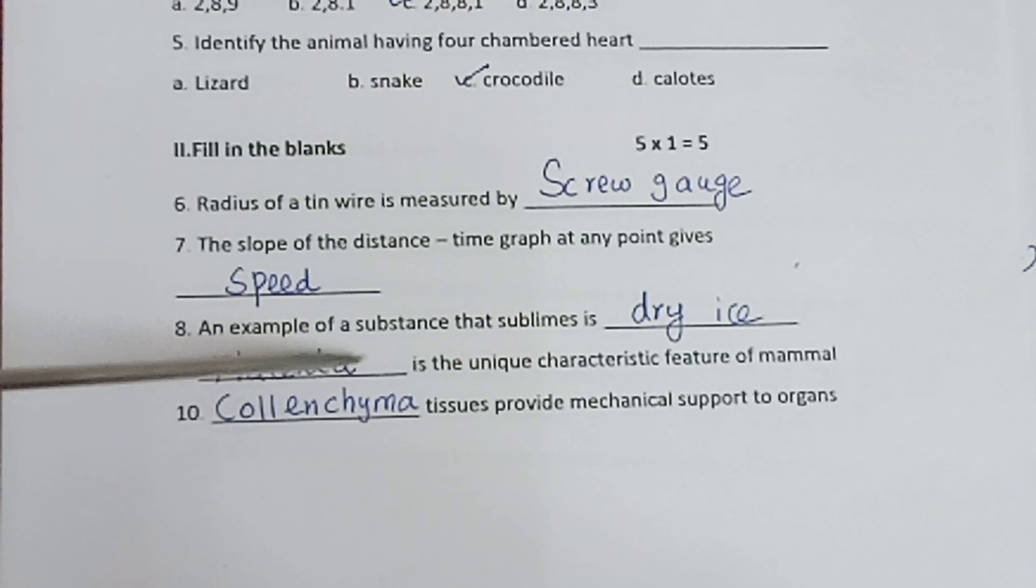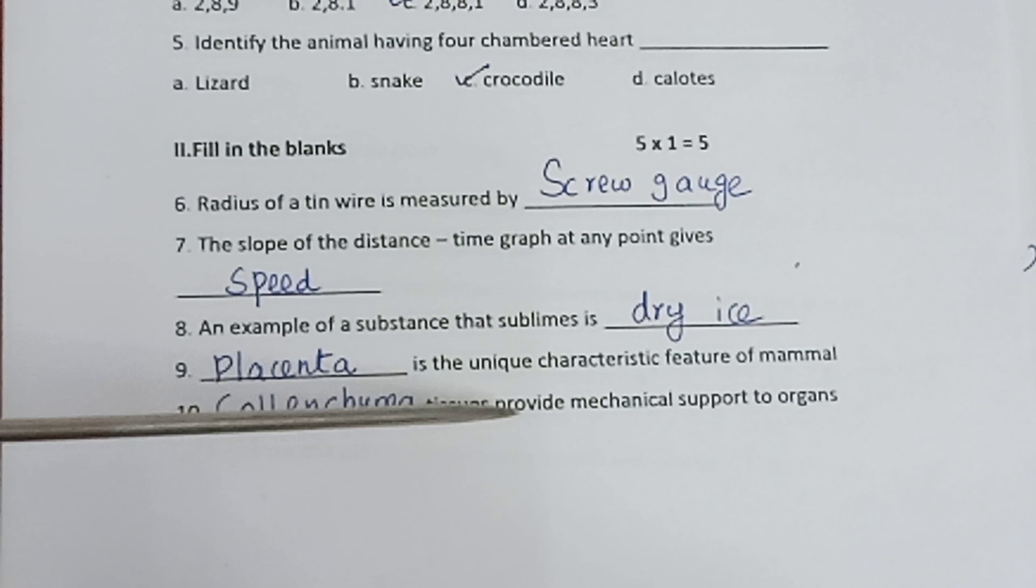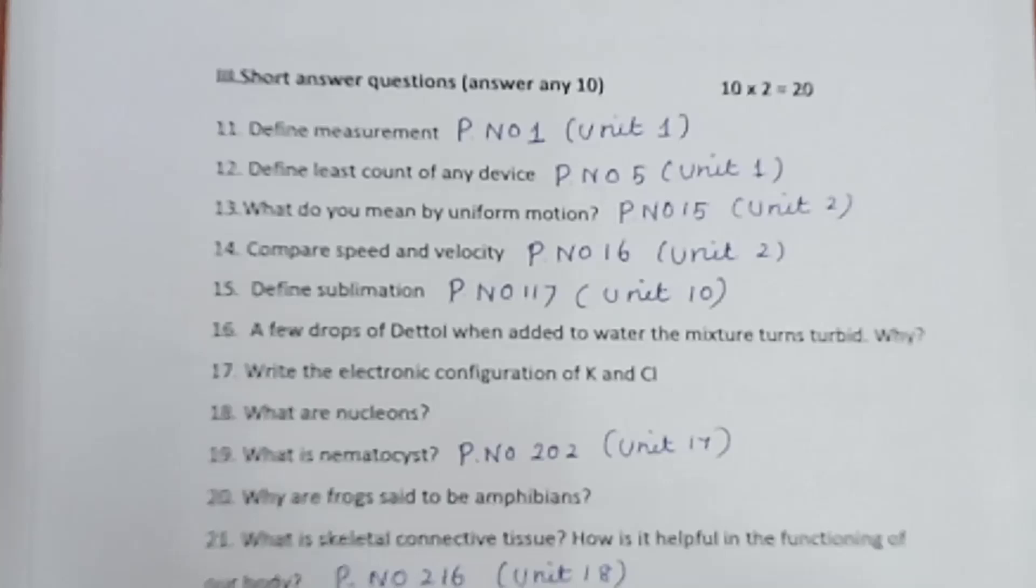Question 8: An example of a substance that sublimes is dry ice. Question 9: Placenta is the unique characteristic feature of mammal. Question 10: Collenchyma tissue provides mechanical support to organs.